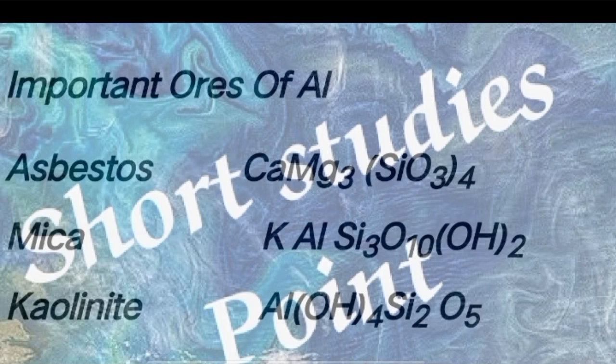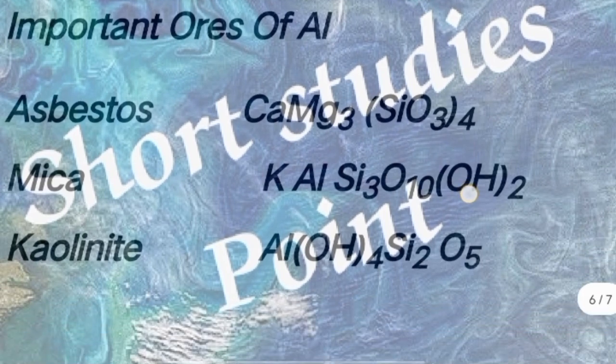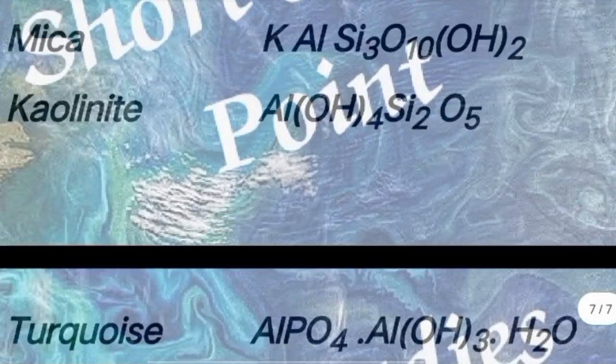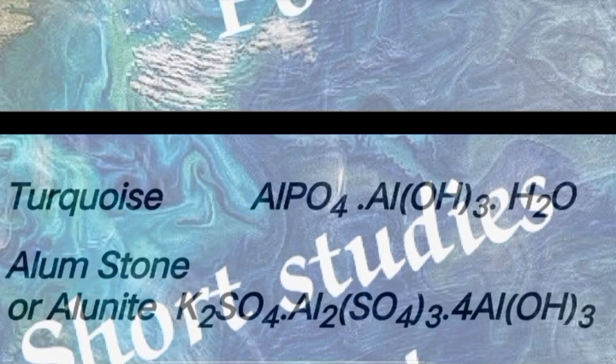Next question: Important ores of Al (continued). Answer: Asbestos (CaMg3(Si3O8)), Mica (KAl3Si3O10(OH)2), Alunite (AlOH4Si2O5).